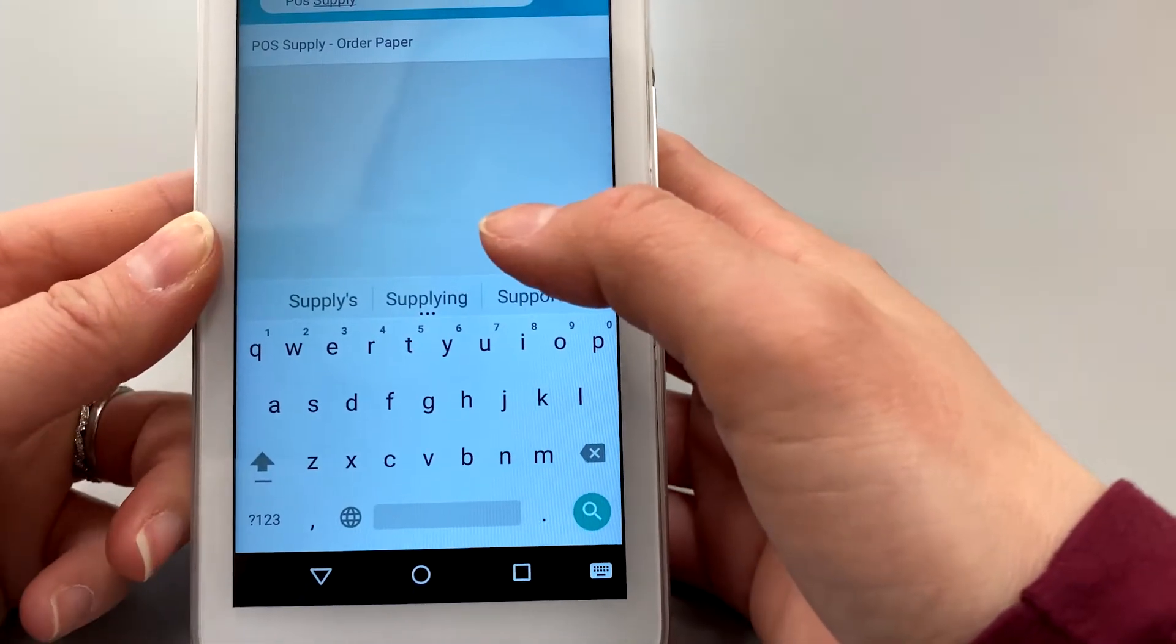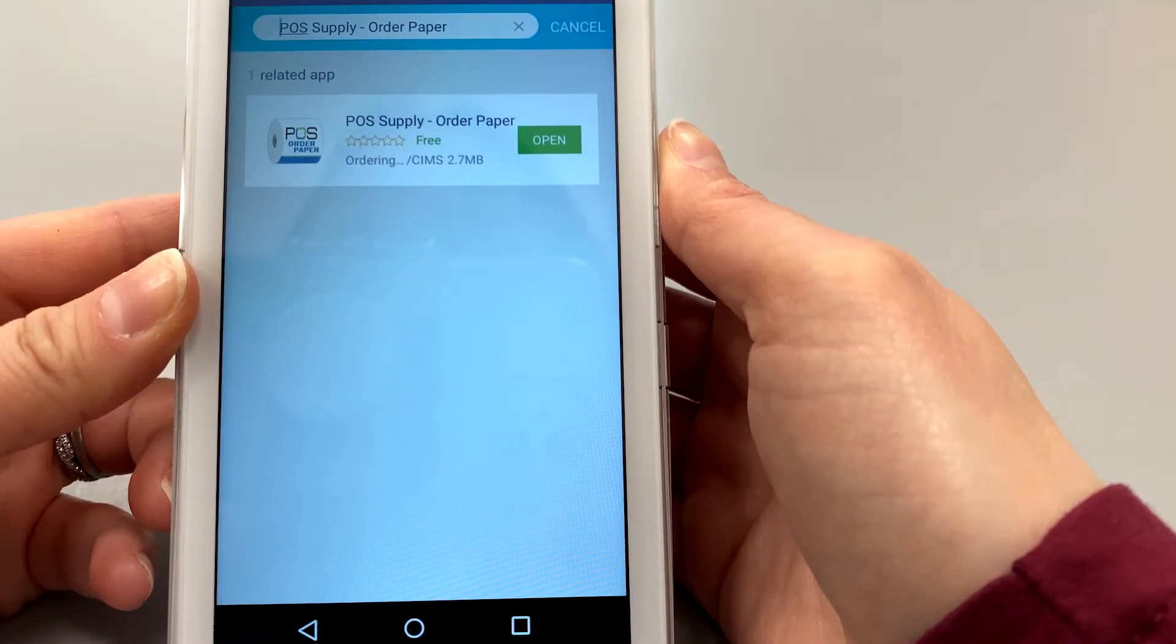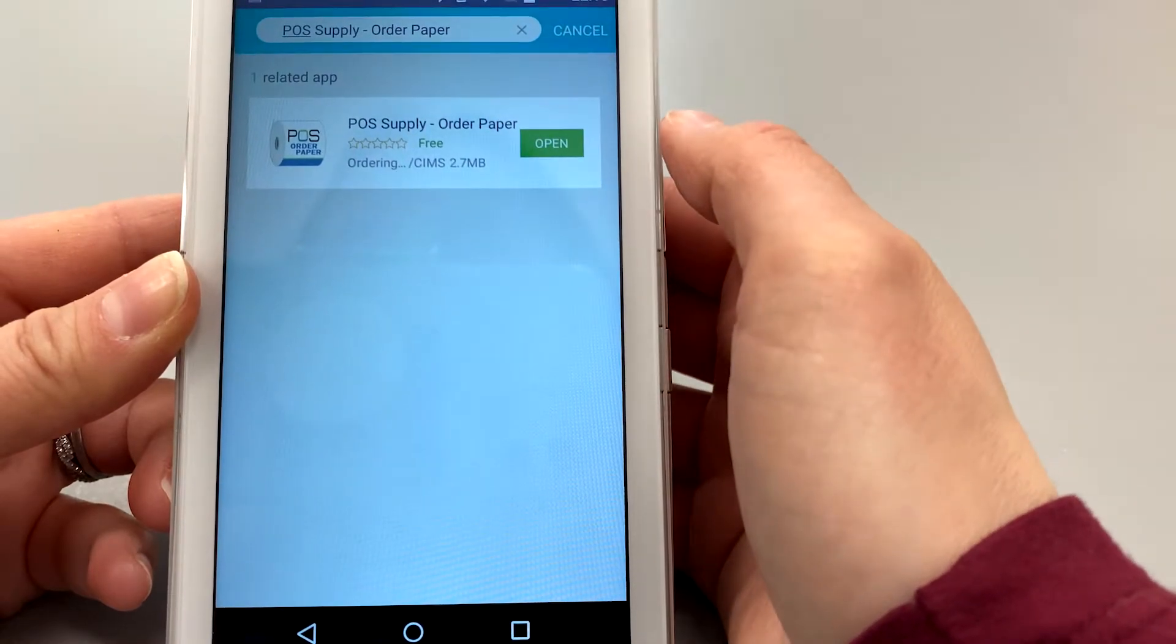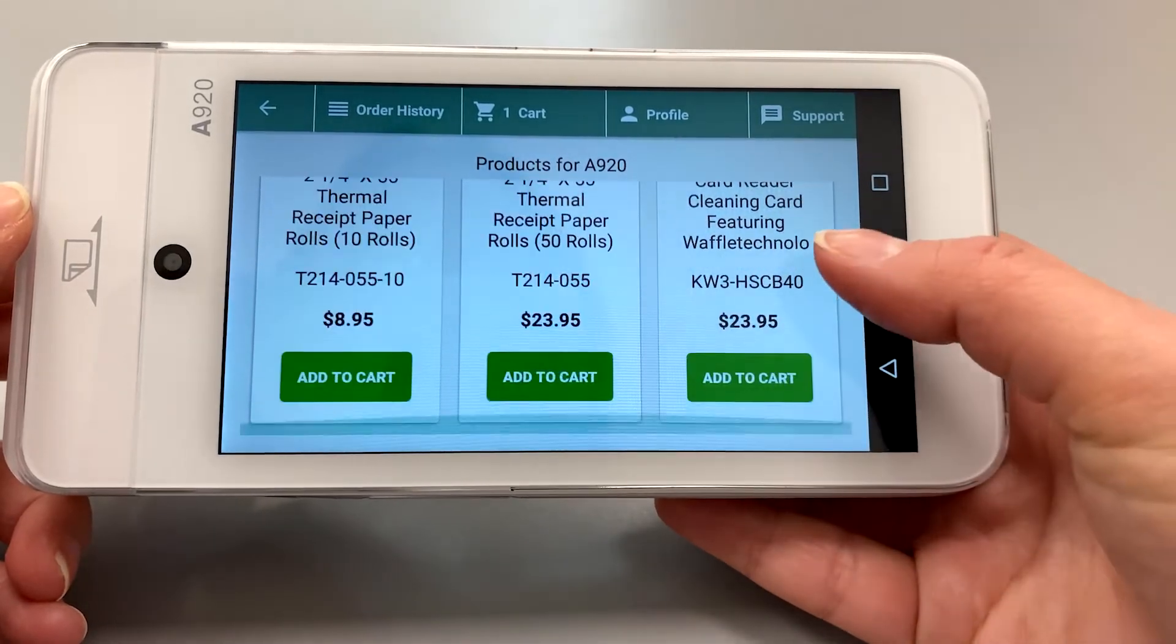Find it by searching POS supply solutions or buy POS paper in the Pax store on any Pax smart POS device. Select your terminal and you will be automatically presented with the paper roll products that fit your machine.